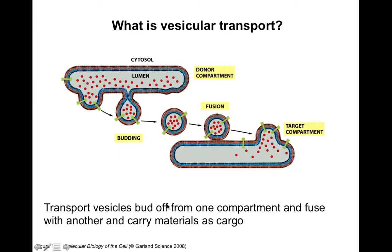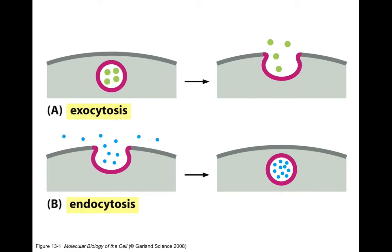So what is vesicular transport? It's when transport vesicles carrying some kind of cargo bud off from one compartment and fuse with another, transferring the cargo from one cellular compartment to another. There are basically two processes: exocytosis, by which the cell releases cargo, and endocytosis, through which the cell uptakes cargo. All the processes between endocytosis and exocytosis are essentially vesicular transport.